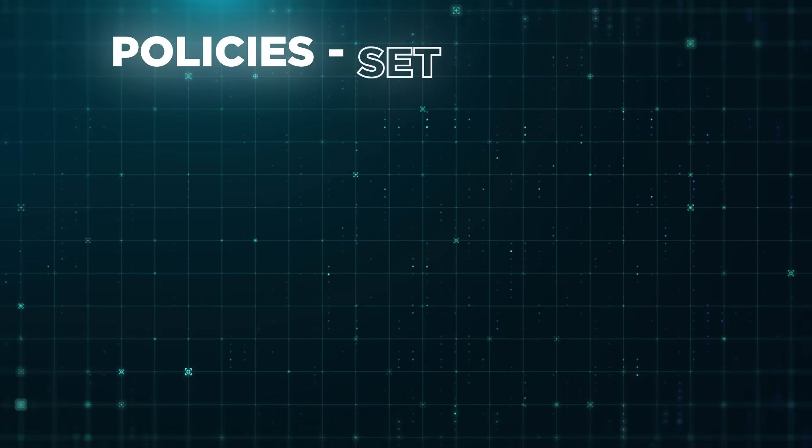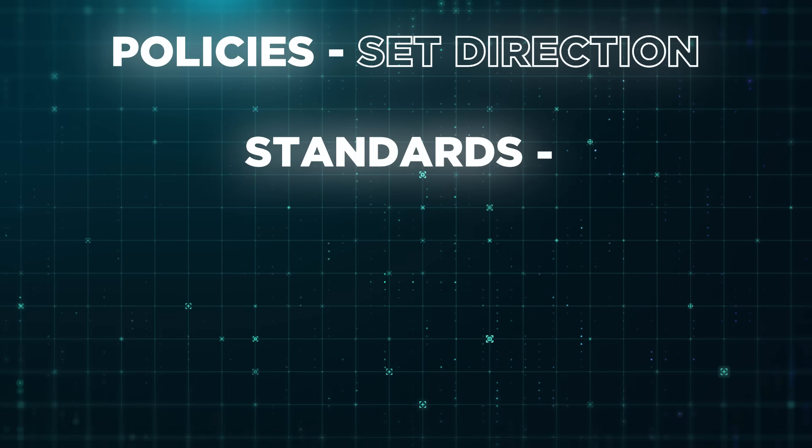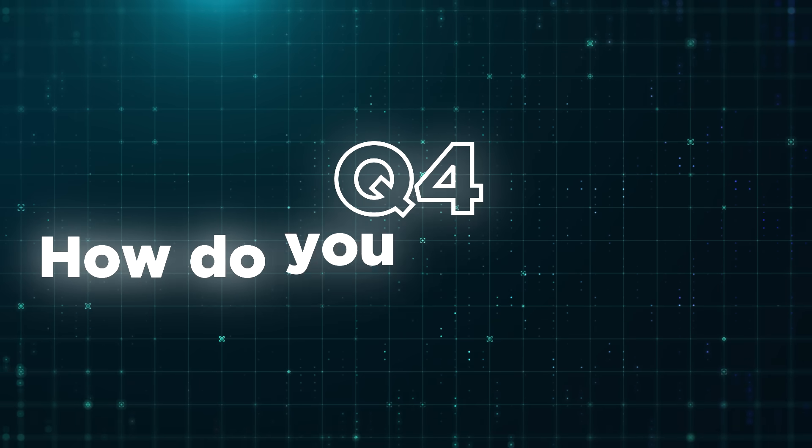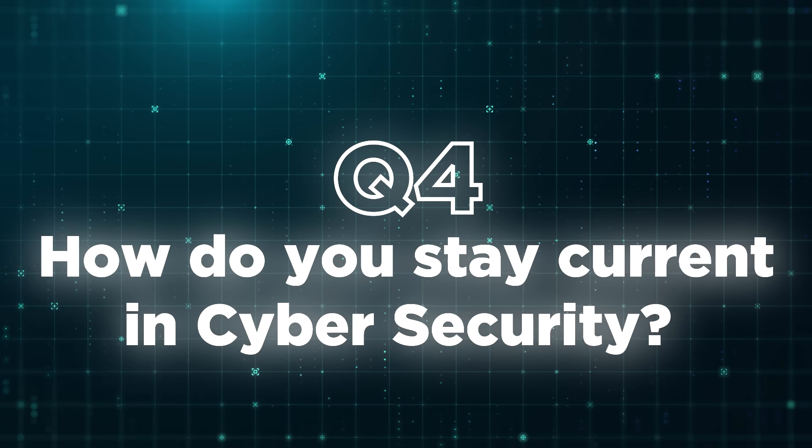Policies set direction, standards define requirements, and procedures explain execution. An easy way to remember this: policies are like traffic laws, standards are like speed limits, and procedures are like directions on how to get from here to where you're going.